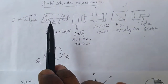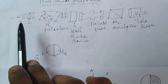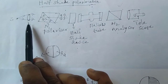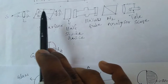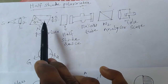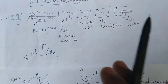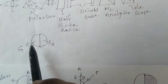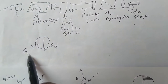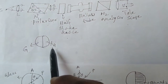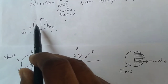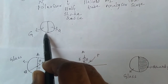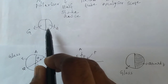We want to discuss the working of the half-shade polarimeter. There is a source of monochromatic light which passes through a convex lens to produce a parallel beam of light, then through a polarizer which produces plane polarized light. This plane polarized light passes to the half-shade device, which consists of two semicircular plates — one semicircular part is glass and the other is quartz. The plane polarized light enters the half-shade device, where some part passes through the glass plate and the other part passes through the quartz plate.